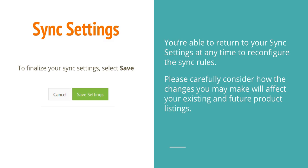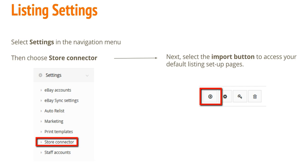You're able to return to your sync settings at any time to reconfigure the sync rules. Please carefully consider how the changes that you may make will affect your existing and future product listings. Next, we'll move on to listing settings. Select Settings in the navigation menu, then choose Store Connector, then select the Import button to access your default listing setup pages.